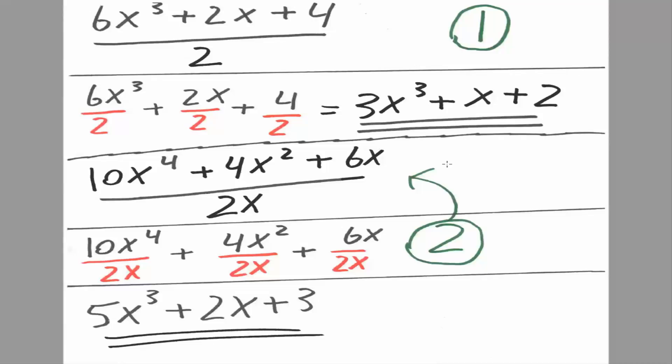Now we will do the next problem. Next one is slightly different. So we have 10x raised to the 4th plus 4x squared plus 6x divided by 2x. So first we would divide each component by 2x.